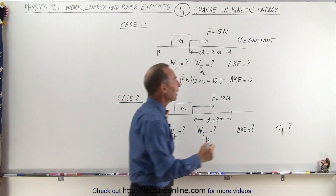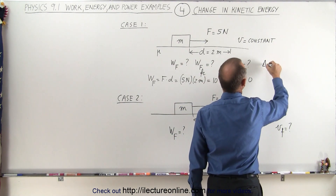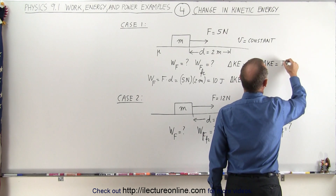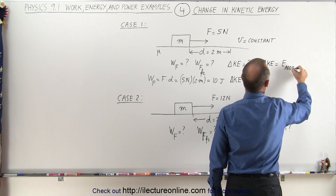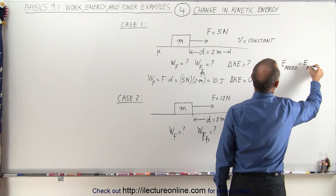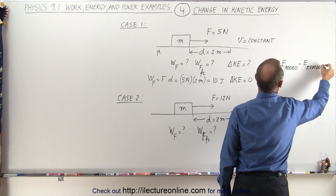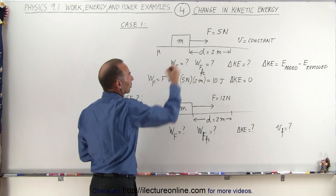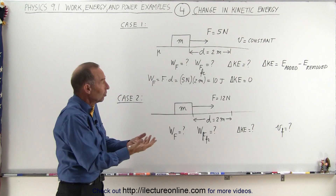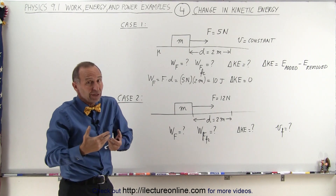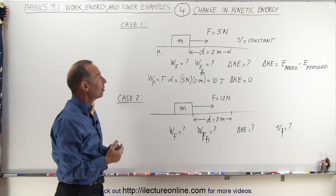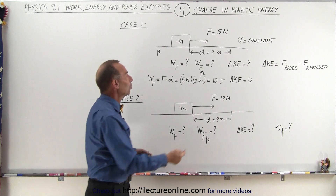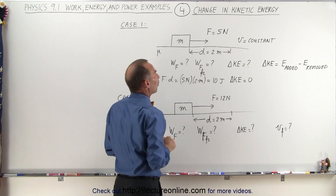We can also say that the change in kinetic energy is equal to the energy added minus the energy removed from the system. The energy added would be the energy from the force pulling on the block — so we add 10 joules to the system — but we end up with a net change of zero, which means an equal amount of energy had to be removed by the friction force.